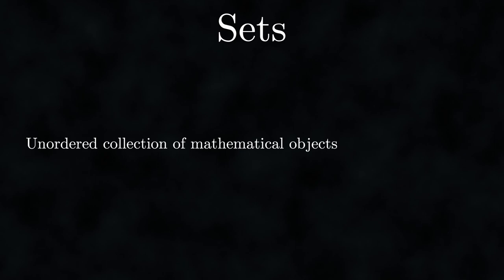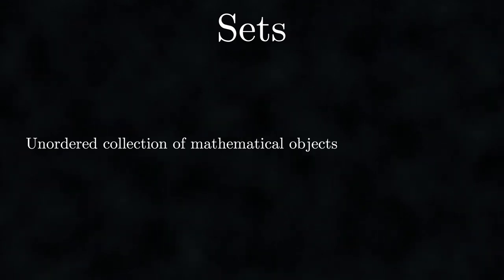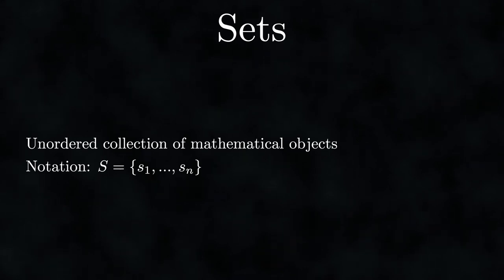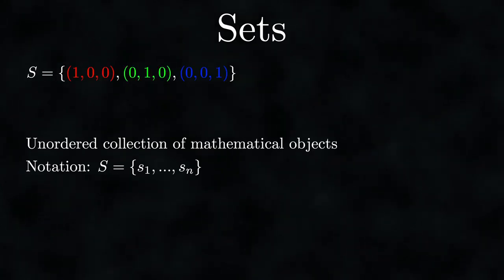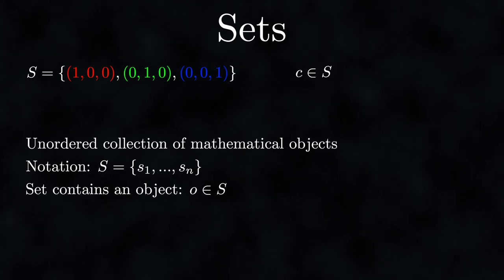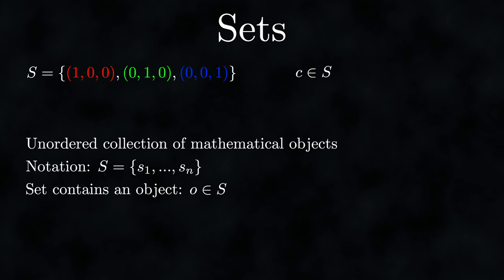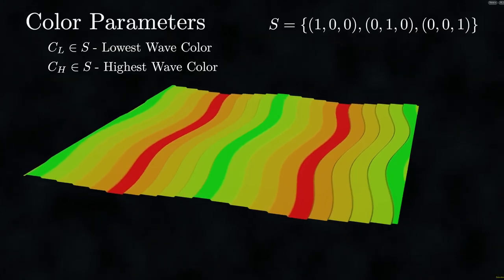As we continue developing a precise language for computer graphics, let's move from tuples to sets. A set is another mathematical structure. Unlike tuples, sets aren't ordered — sets only specify whether an element belongs to the set or not. The simplest notation is to use curly braces. If we interpret the tuples inside a set as colors, we effectively create a set of three colors: red, green, and blue. To indicate that an element belongs to a set, we write 'c is an element of s', and the opposite uses a different notation.